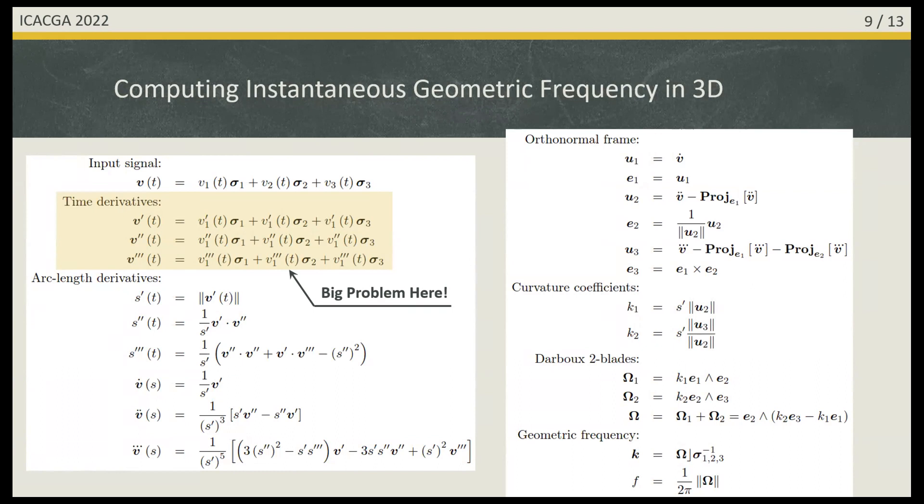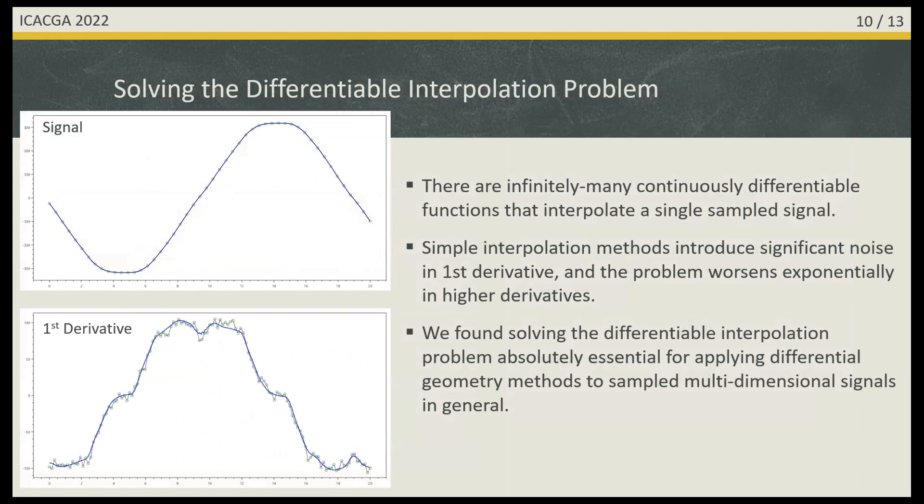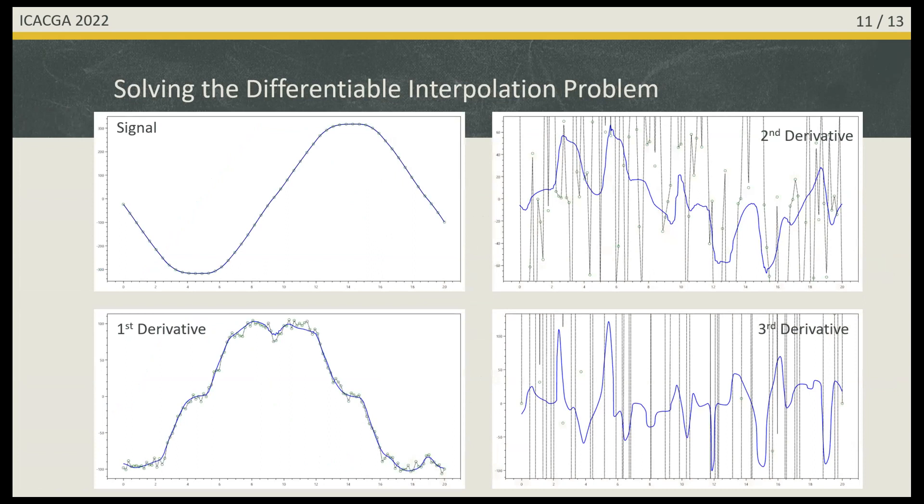The formulation is very simple in geometric algebra mathematics, but I need to emphasize one problem we faced. To use differential geometry, we must have a differentiable curve, but typically we have sampled data - a three-phase signal with many samples. We need an interpolation method that can be differentiated to higher dimension. This turned out to be very difficult. There are many continuous differentiable functions that can interpolate a given sample signal. If we use naive interpolation, we make much noise in derivatives and lose useful information.